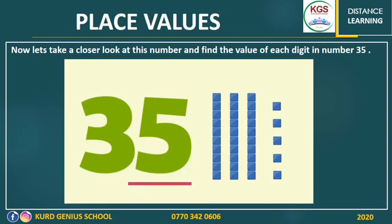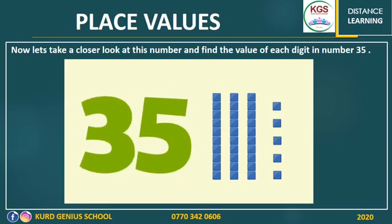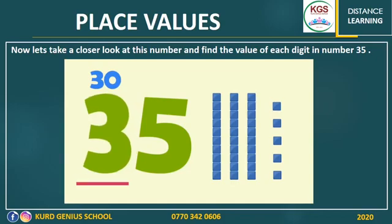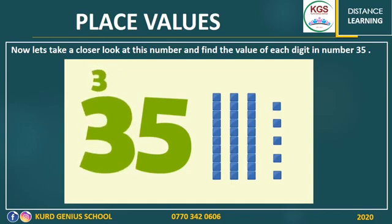Look at this number. In number 35, the number in the ones place always equals itself — the value of five in 35 is just five, and it is represented by five ones cubes, as you can see. But the number in the tens place is always 10 times the value of the number showing — it's like counting by tens to the number you see there. Three in 35: the value of three is 30, and you can count by 10 three times: 10, 20, 30. So the value of three here is 30, or you can just put a zero at the end of the number. You can see it's represented by three tens blocks.